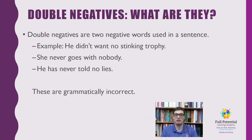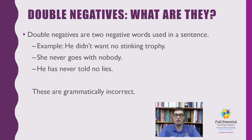Double negatives — what are they? Double negatives are sentences that have two negative words in the sentence at the same time. For example: 'He didn't win no stinking trophy,' 'She never goes with nobody,' and 'He has never told no lies.' These are all incorrect because the double negative words make it confusing and counteract the clear meaning of the sentence.